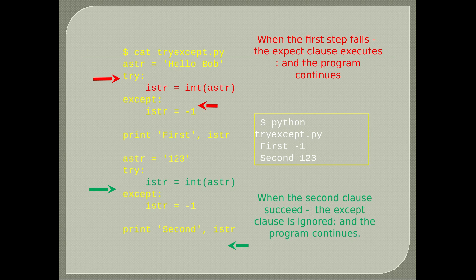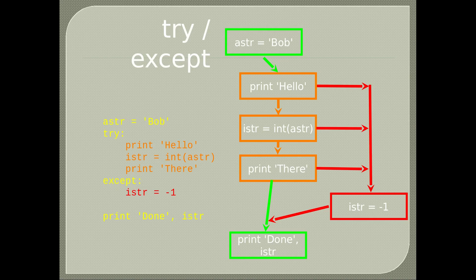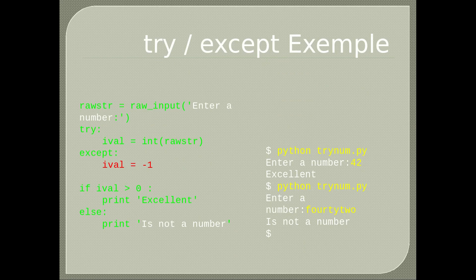We created a variable astr = 'hello Bob'. In the try statement, we try to convert the string astr to an integer. Since this gives an error, the except clause executes and prints negative 1. In the second example, same variable equals '123' — the conversion to integer will be successful and 123 will be printed. This is a simple example to test if a user input is a number or not: if the try clause returns an error, then it is not a number.